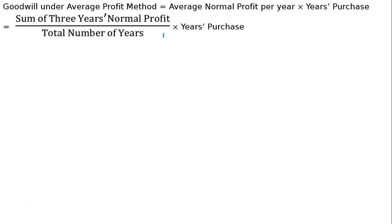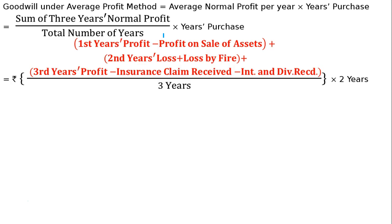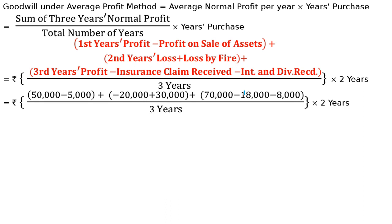The concept I mentioned is that these items need to be adjusted. In the third year, interest and dividend received are both non-operating incomes. A business is not a finance company — its job is not to earn interest or dividends. So we deduct both interest and dividend received from the profit.